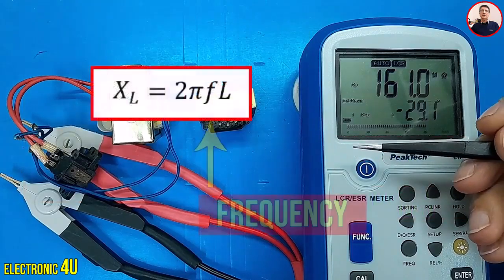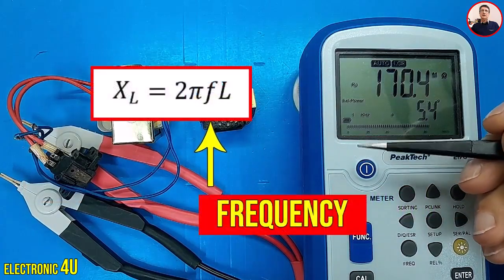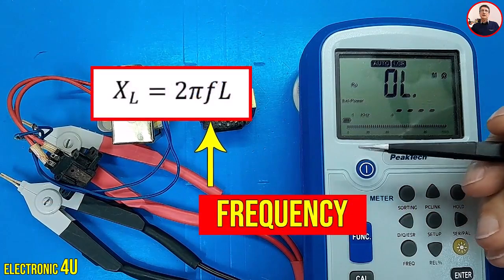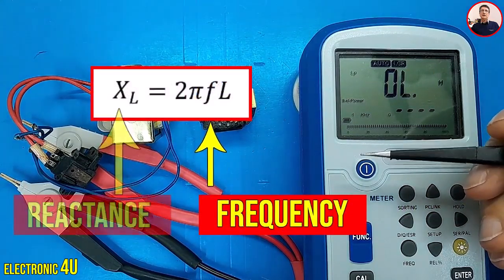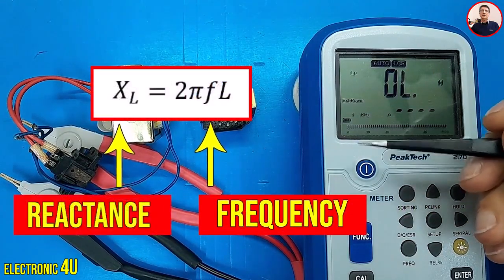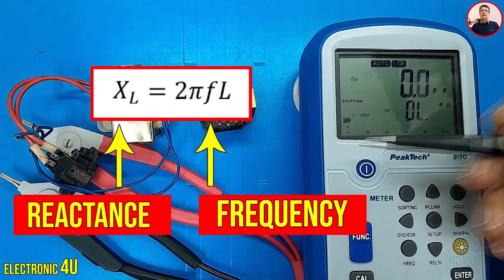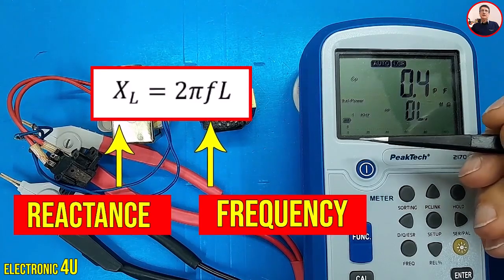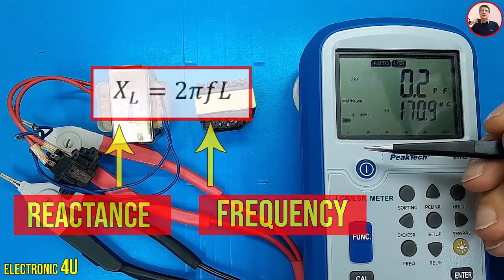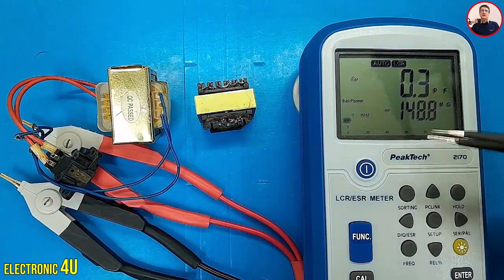The higher the frequency, the higher the change in current. And this causes the EMF to increase and as a result, the reactance also increases. Therefore, the reactance has a direct relationship with the frequency of the AC signal. So, what result do we get?